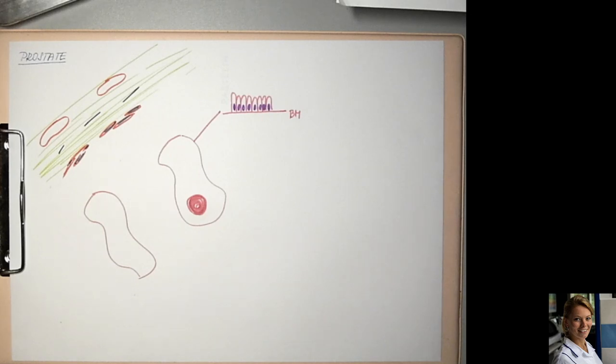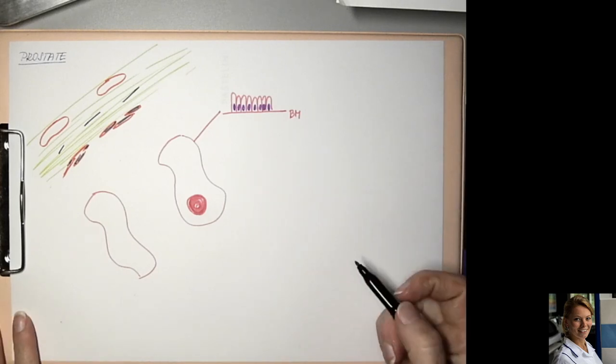And their name are prostatic concretions. So this is the branched tubular gland. And these glands are surrounded by fibromuscular stroma.